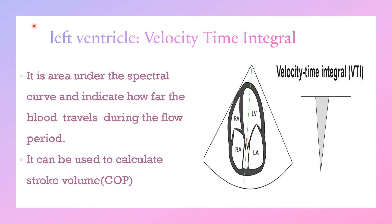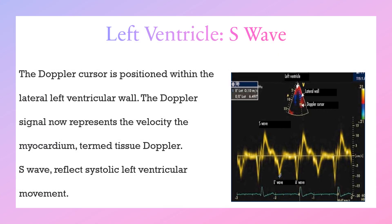The second echo parameter for assessing left ventricle performance is the flow velocity time integral, abbreviated as VTI of the LVOT (left ventricular outflow tract). We obtain this through the apical five-chamber view by placing the pulsed wave Doppler below the aortic valve at the LVOT. The VTI is the area under the spectral curve and indicates how far blood travels during the flow period. It is used to calculate stroke volume, and to be weanable it should be more than 12 cm.